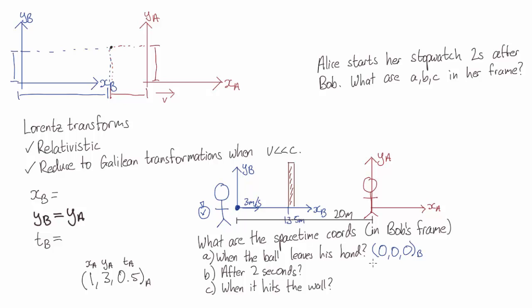After 2 seconds, the ball has traveled forward 6 meters. It's not moved along the y-axis, so it's still at y equals 0, and 2 seconds have elapsed. So the coordinates of where the ball is after 2 seconds is 6 meters, 0, and 2 seconds after Bob's started time.